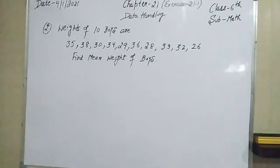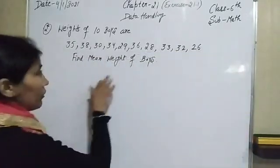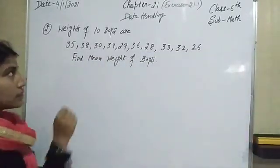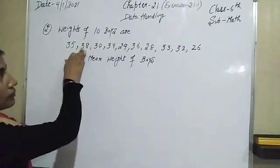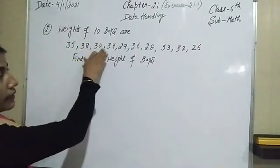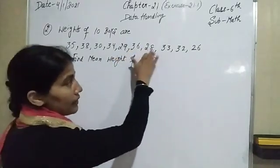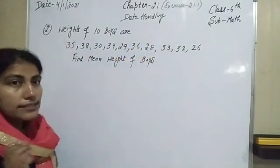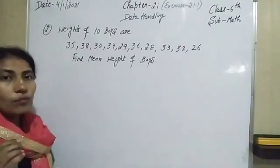The next question: the weights of 10 boys are given and we have to calculate the mean weight. The weights of the 10 boys are: 35, 38, 30, 34, 29, 36, 28, 33, 32, and 26. We have to calculate the mean weight of the boys.